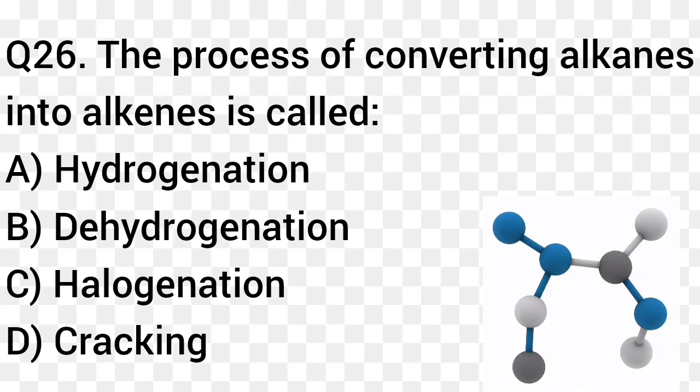Question number 26. The process of converting alkenes into alkanes is called: Option A: Hydrogenation. Option B: Dehydrogenation. Option C: Halogenation. Option D: Cracking. The right answer is option B, Dehydrogenation.